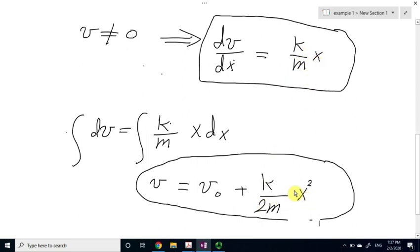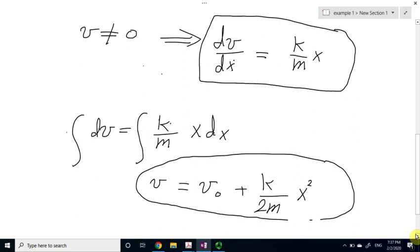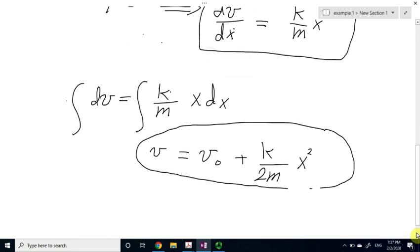Now you can check when x is 0, the velocity should equal to v0. So now we found the relation between velocity and position.